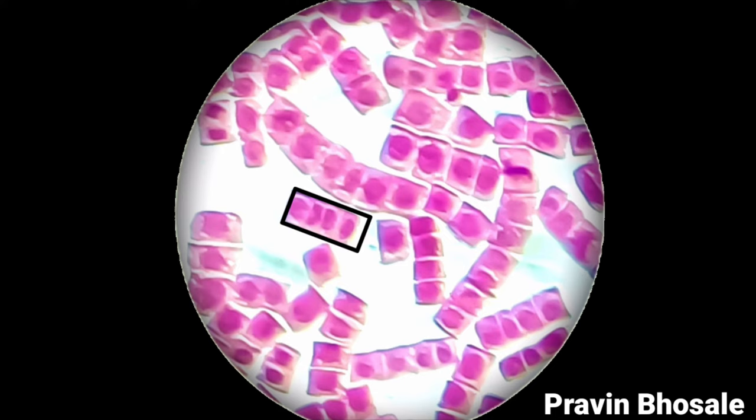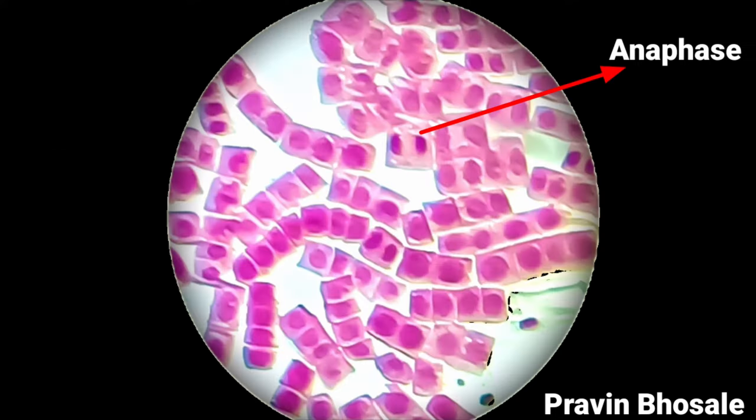Here in these two cells you can see anaphase. In anaphase, the sister chromatids are moving towards the opposite pole. Over here this is late anaphase — the sister chromatids have reached the opposite pole, and further there will be the telophase stage.